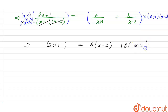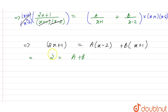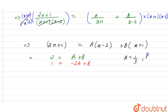If we compare the coefficient of x, we get 2 = A + B. If we compare the constant term, we get 1 = -2A + B. Solving these, A is equal to 1/3 and B is equal to 5/3.